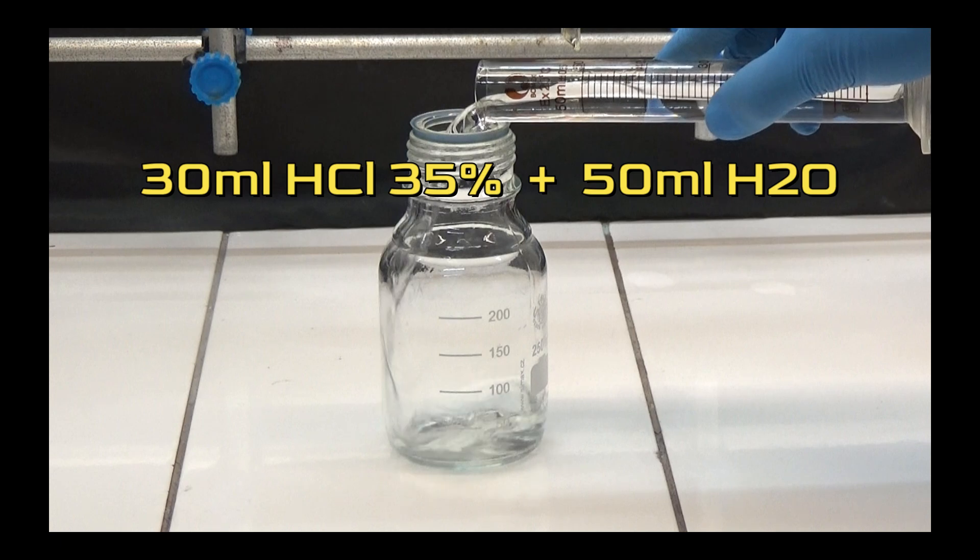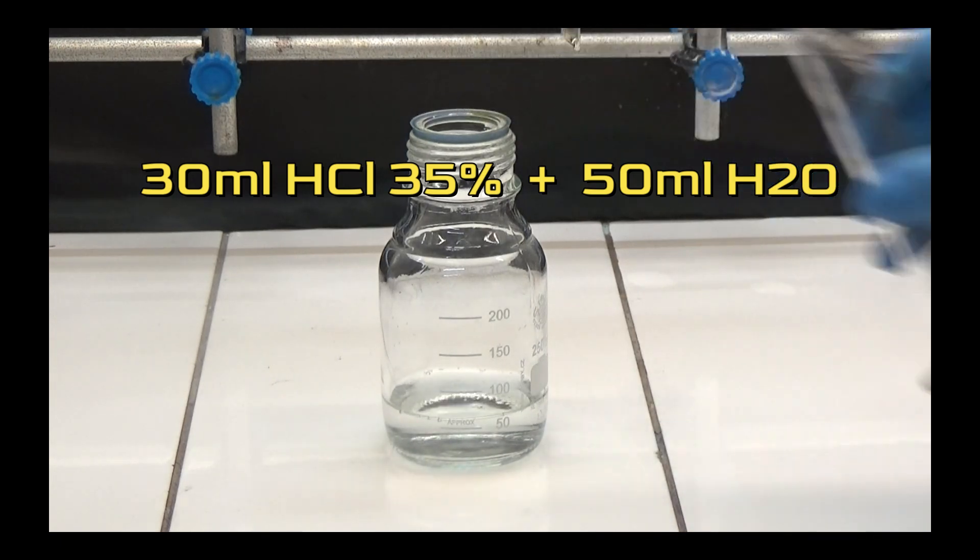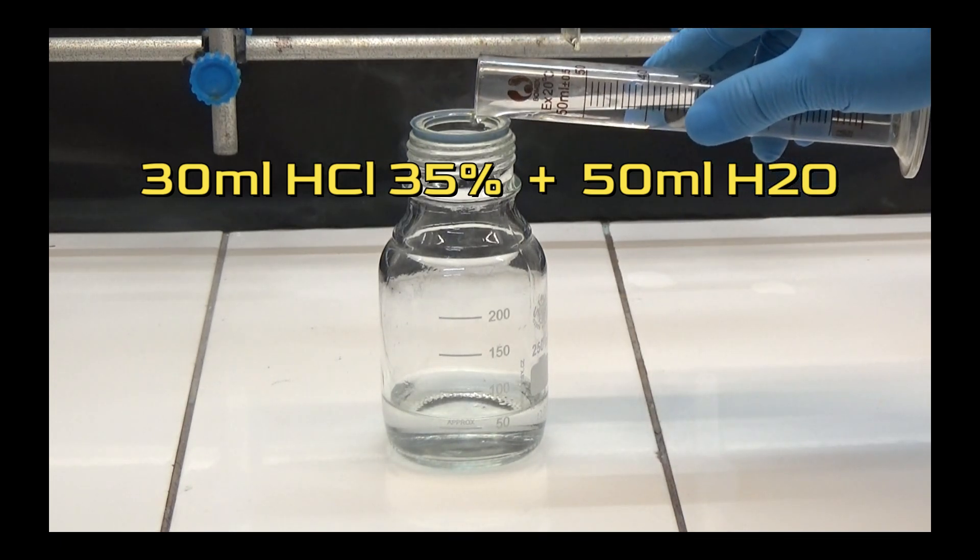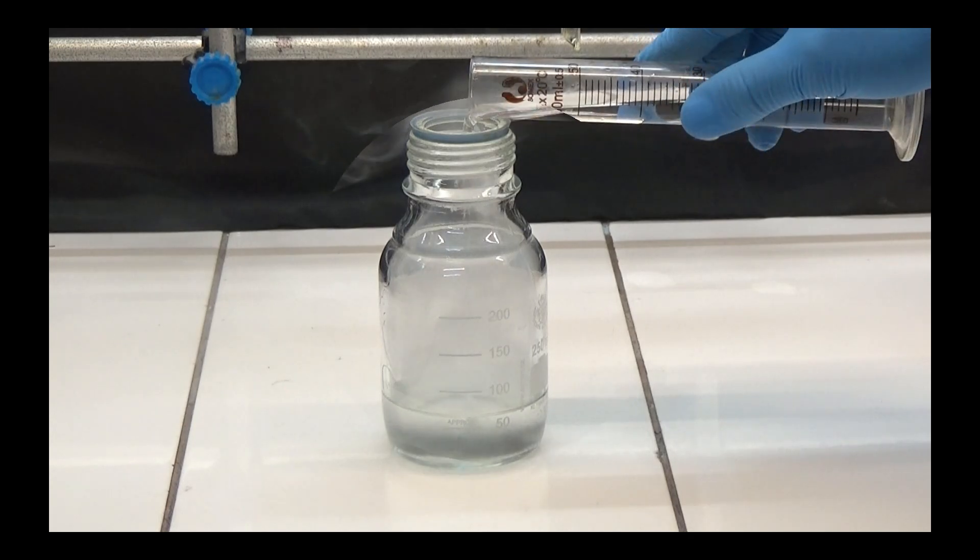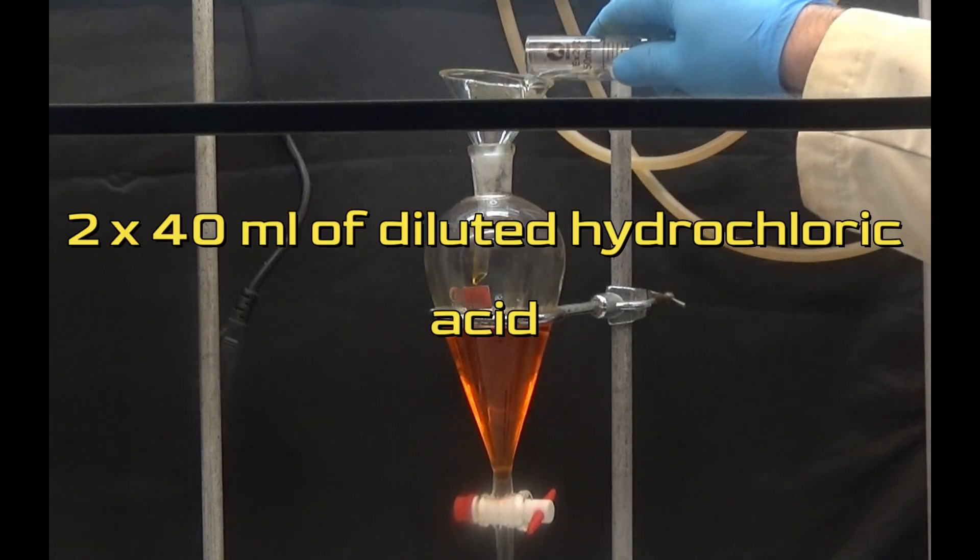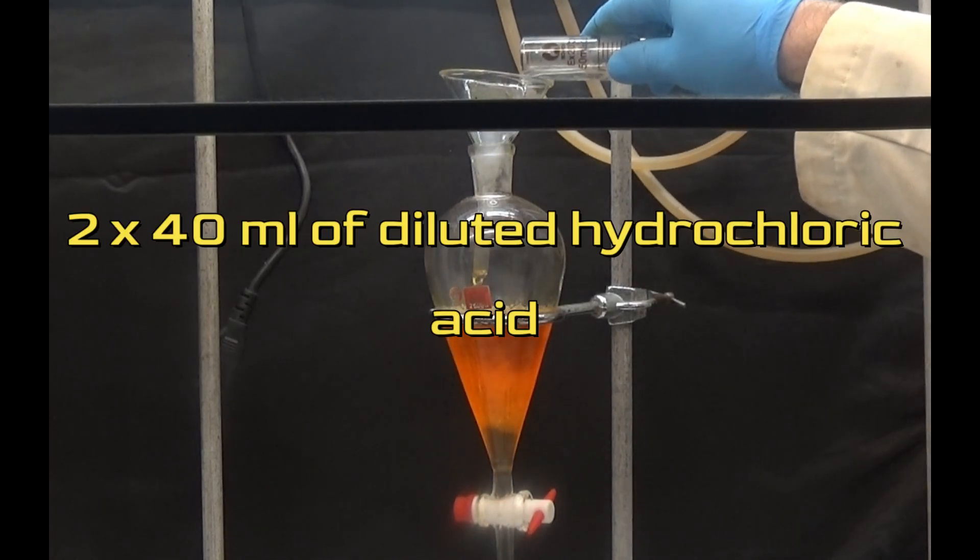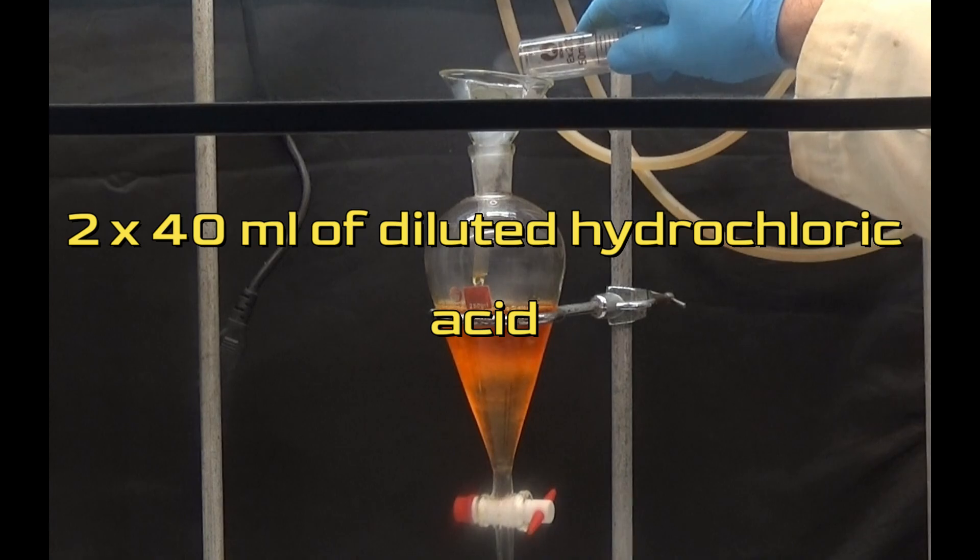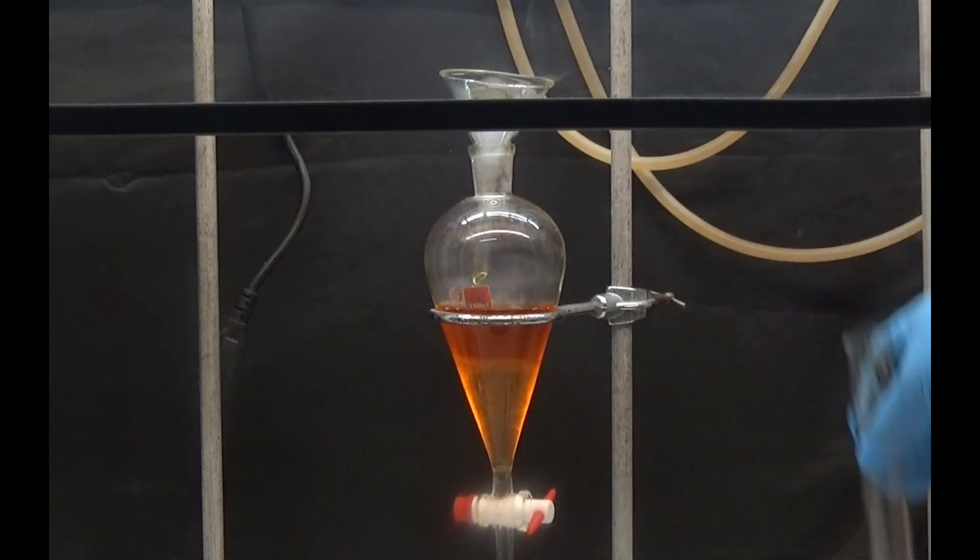Prepare diluted hydrochloric acid by dissolving 30 milliliters of 35 percent acid in 50 milliliters of water. The organic ether phase was cleaned by using 2 by 40 milliliters of diluted hydrochloric acid in a separating funnel, and each extraction was shaken for five minutes.